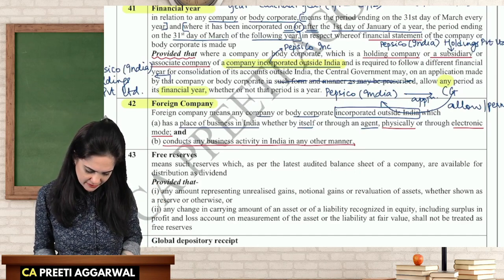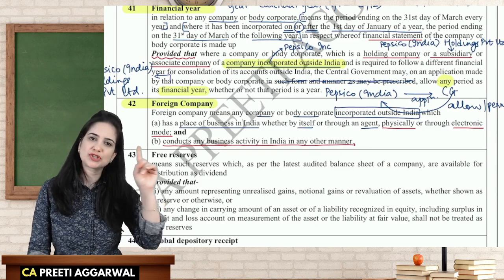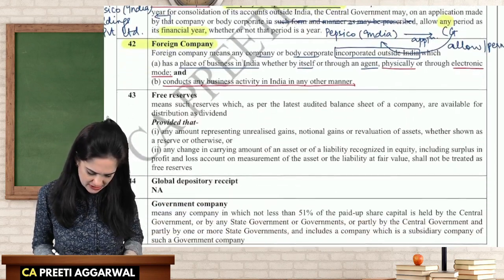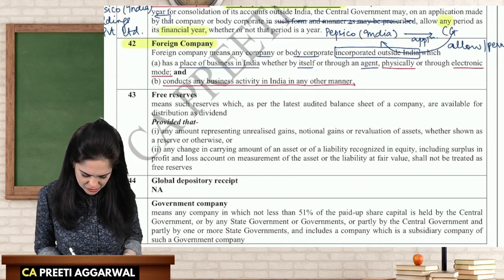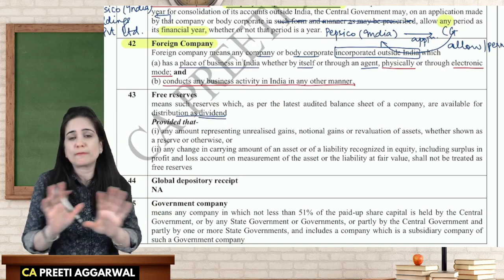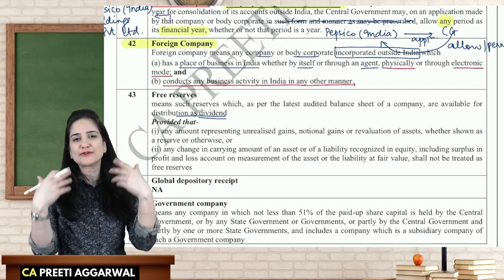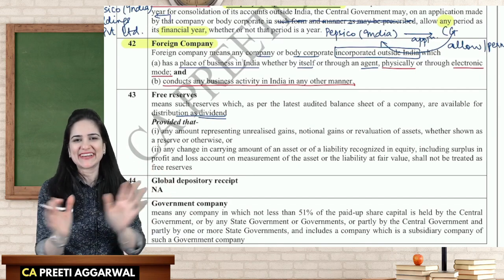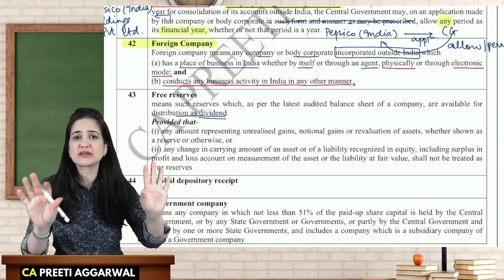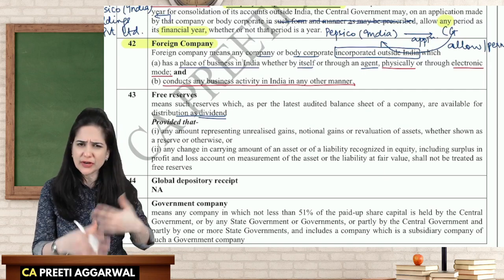Free reserves will be discussed in the chapter on share and share capital. Simply, free reserves are those reserves available for distribution in the form of dividend — there is no specific purpose for them. Unlike capital reserves (which have a fixed purpose), free reserves can be used for anything. They are generally earned from regular business activities.